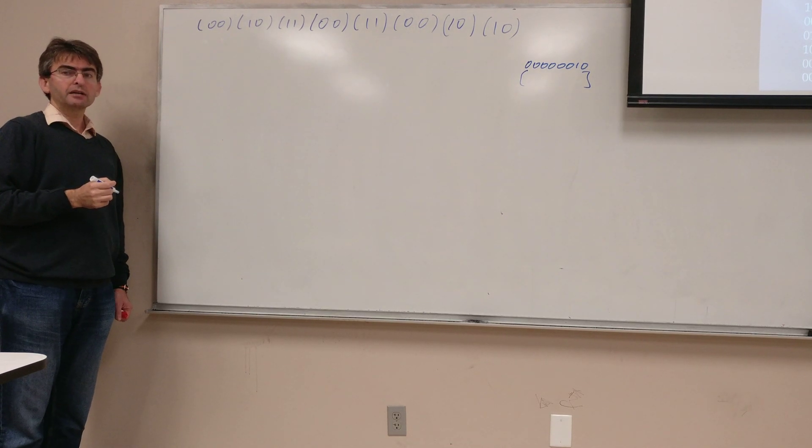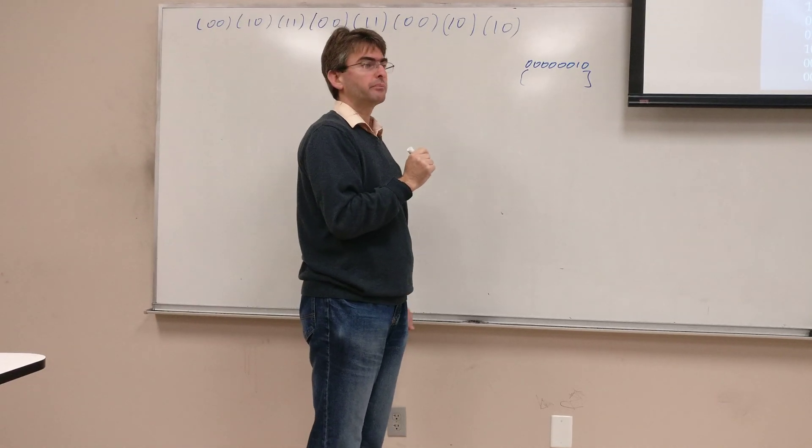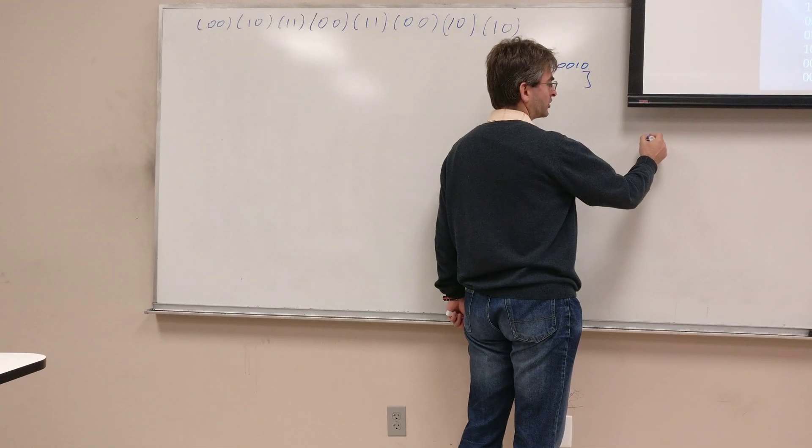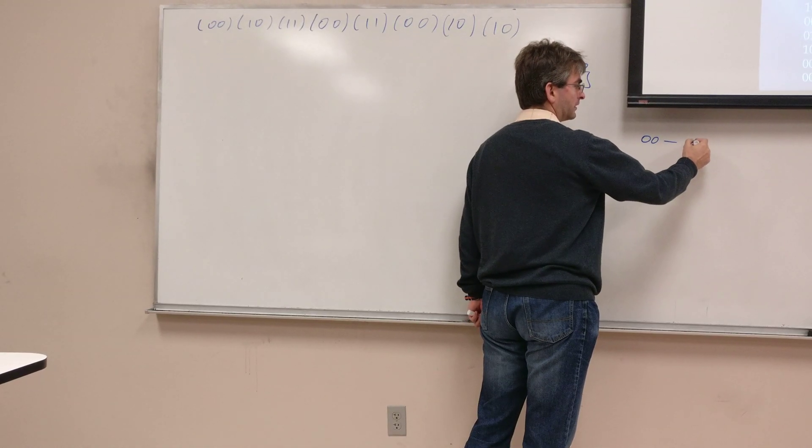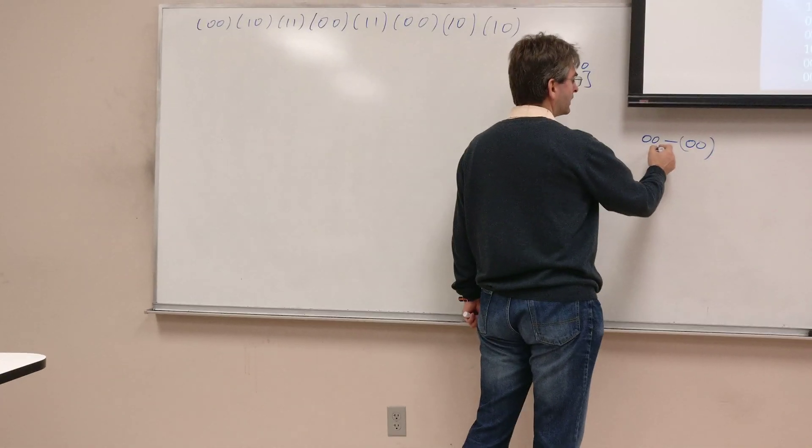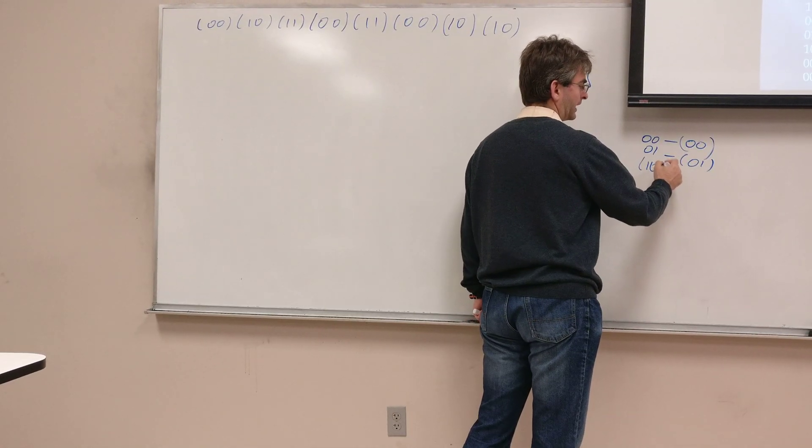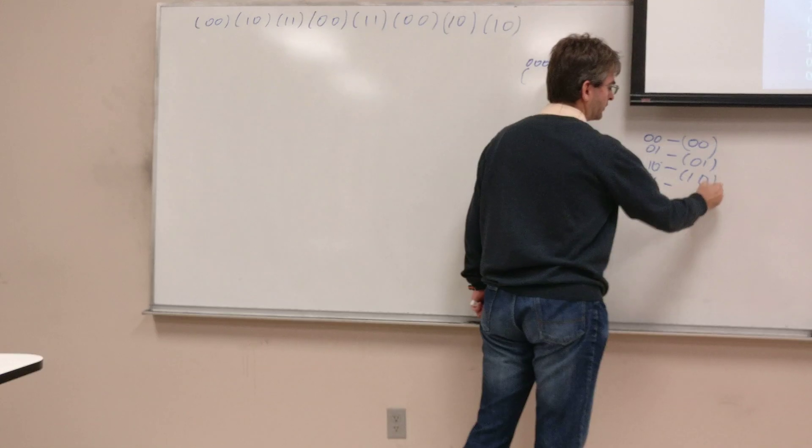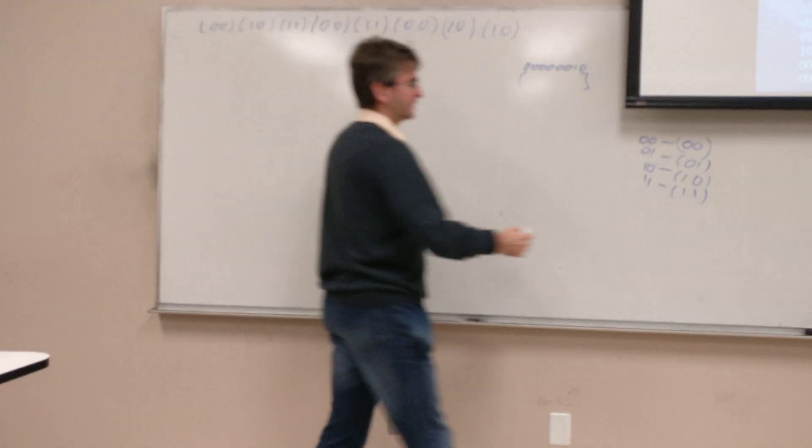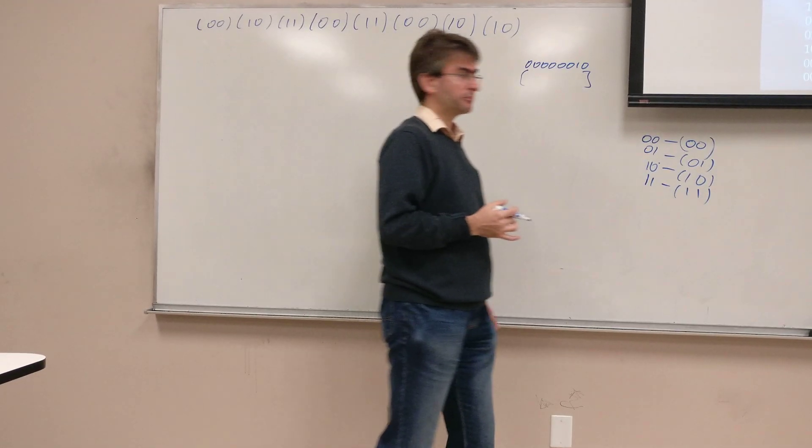As we discussed last time, the LZW algorithm is based on dictionary compression which means at the beginning we already have a dictionary that's assumed. So at position zero you have pixel color zero. At position one you have 01. At position two, it's all binary, you have 10 and at position three you have 11. It's an implicit dictionary where you have an entry for each existing pixel on two bits.